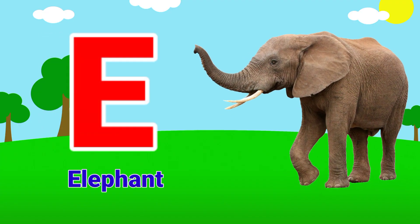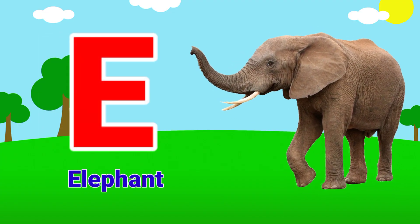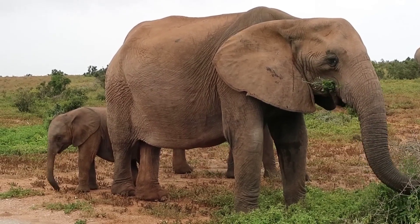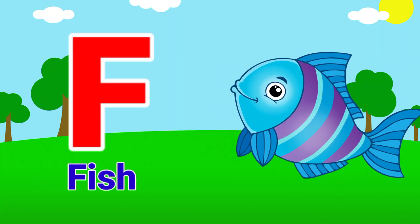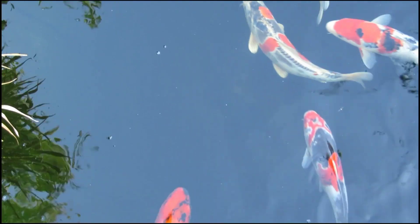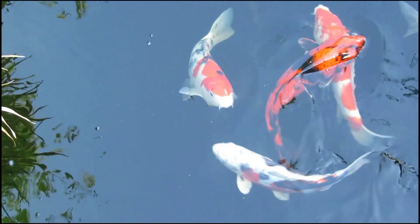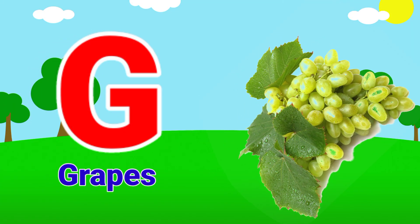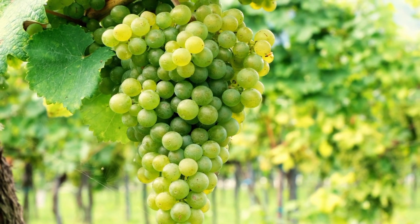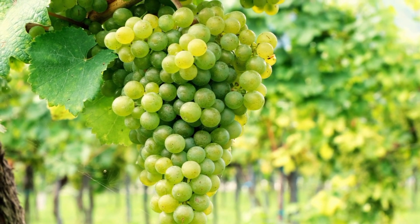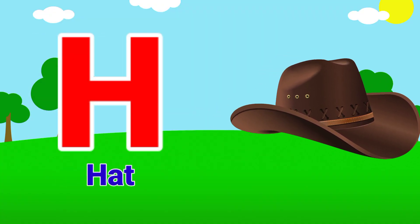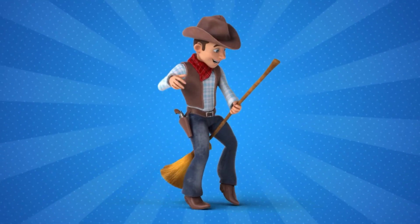E. E for elephant. Elephant. F. F for fish. Fish. G. G for grapes. Grapes. H. H for hat. Hat.